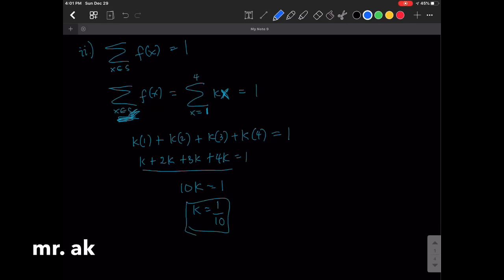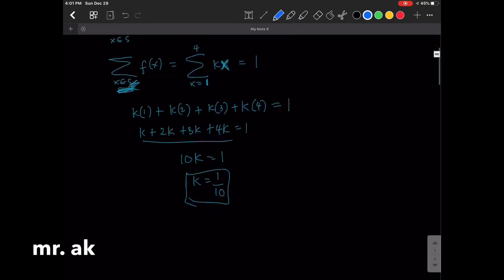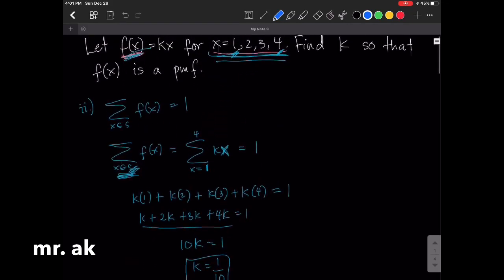We now have a value for k. And that means that f(x) should be k, which is 1 over 10, times x, if x is in the support, 1, 2, 3, 4.